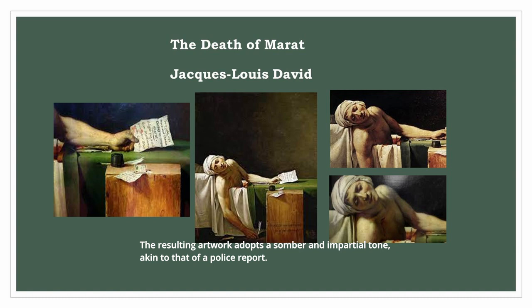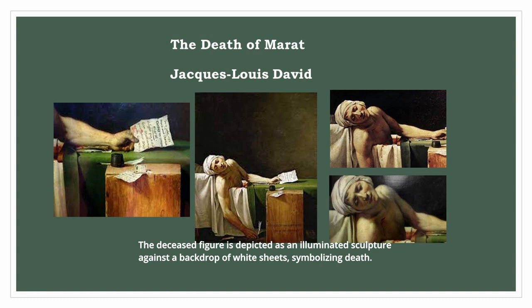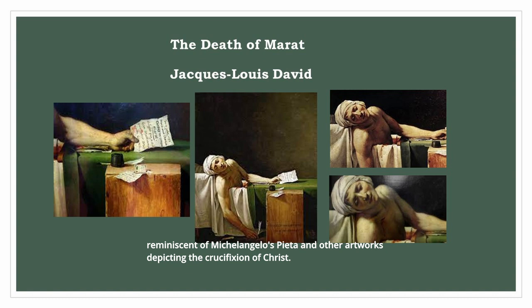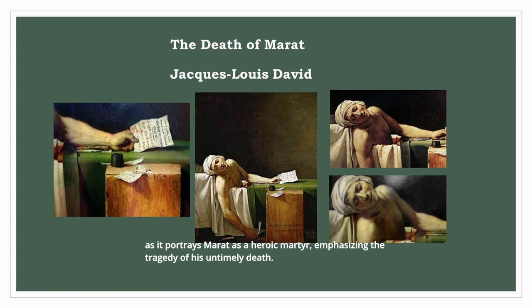The composition of the painting presents a contrasting play of light and dark, creating a neutral atmosphere of depth. The deceased figure is depicted as an illuminated sculpture against a backdrop of white sheets, symbolizing death. The painting presents a scene that is both dramatic and austere, reminiscent of Michelangelo's Pietà and other artworks depicting the crucifixion of Christ. This deliberate association amplifies the emotional impact of the painting, as it portrays Marat as a heroic martyr, emphasizing the tragedy of his untimely death.